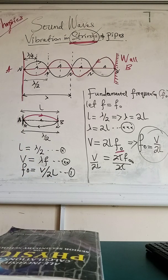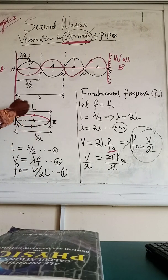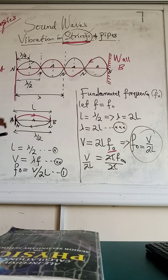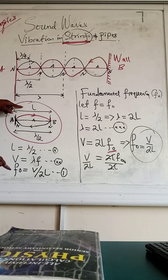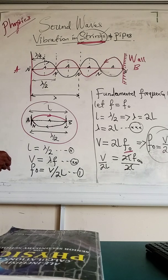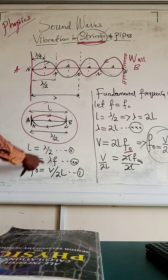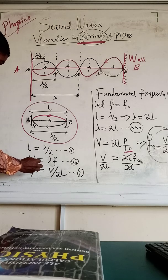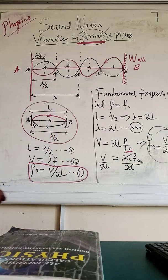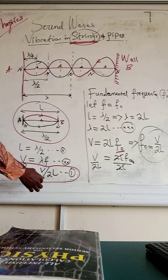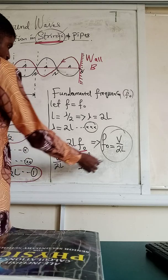This diagram here is a vibration obtained in one single loop. We call this the fundamental mode of vibration. The fundamental mode of vibration produces what we call fundamental frequency. We derived this frequency following all the steps down to this point.